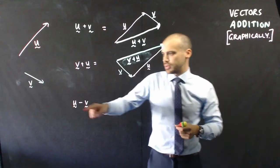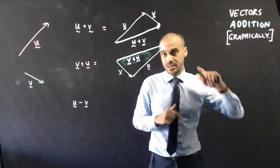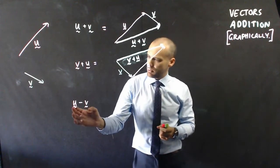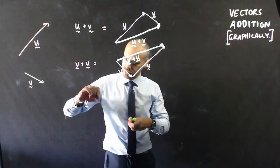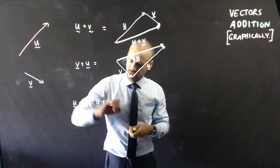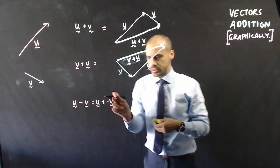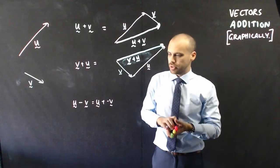Last step, subtracting vectors. Now, the reason we're doing it in the addition video is because if you want to subtract vectors, what you can really write it as is u plus negative v. Alright, so let's look at what that would look like.